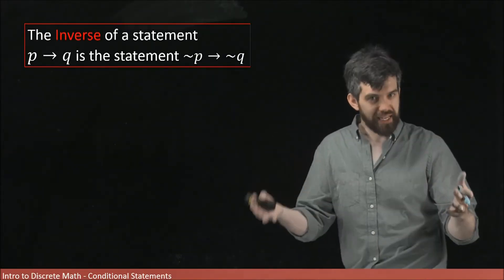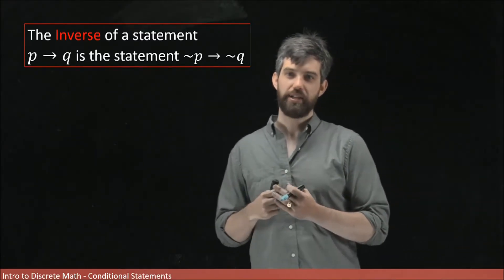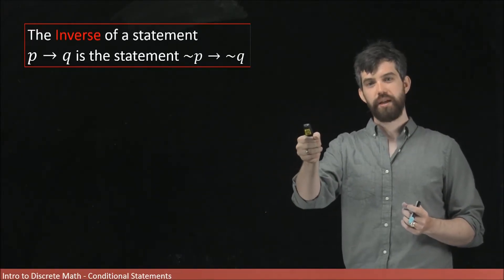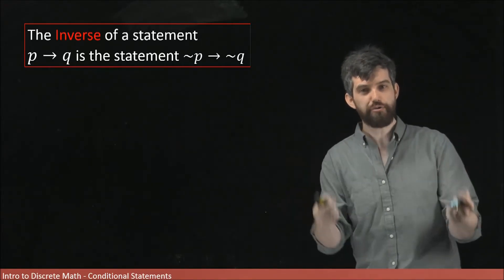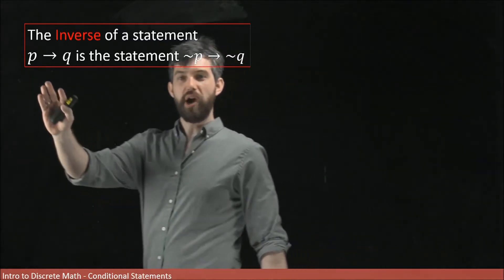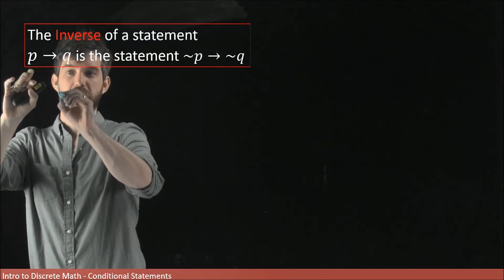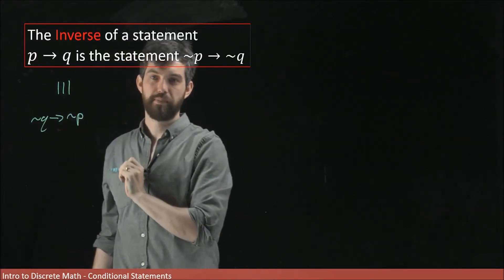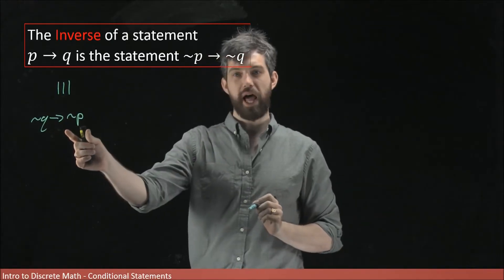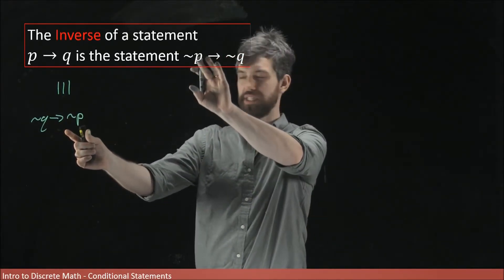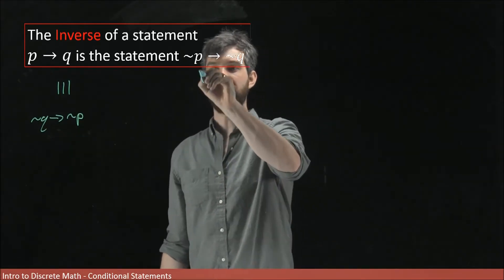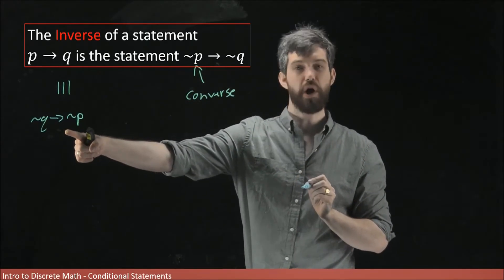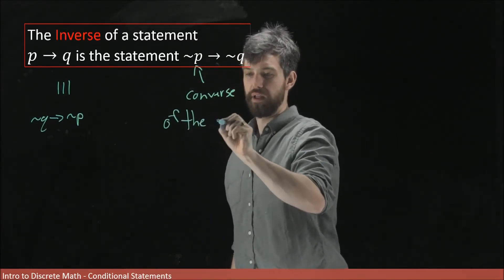Another statement related to our initial conditional is called the inverse. The inverse of P implies Q is the statement not P implies not Q. This is like taking the contrapositive of the converse. We know that P implies Q is logically equivalent to not Q implies not P (the contrapositive). The inverse — not P implies not Q — has the order flipped relative to that, making it the converse of the contrapositive.